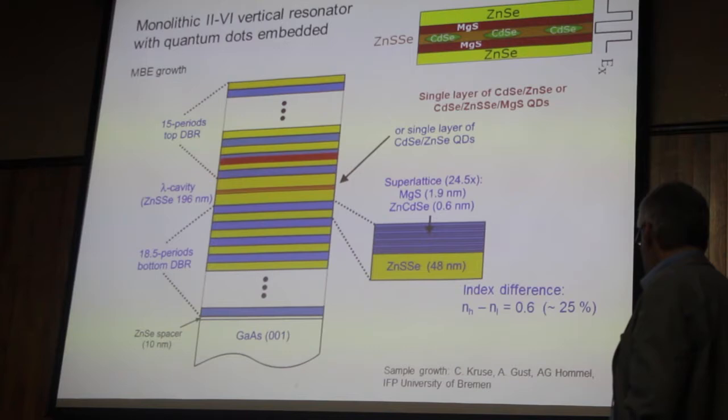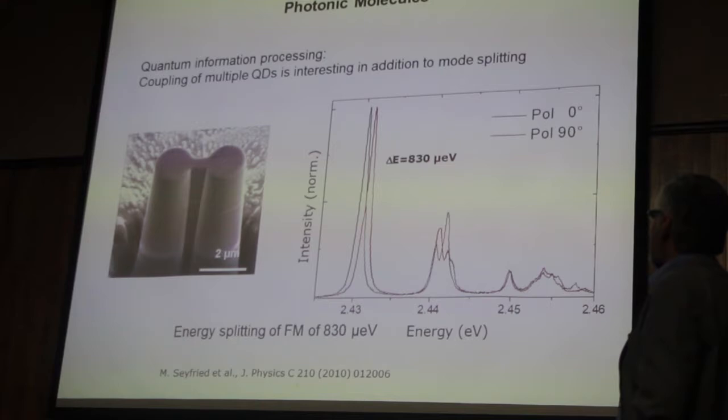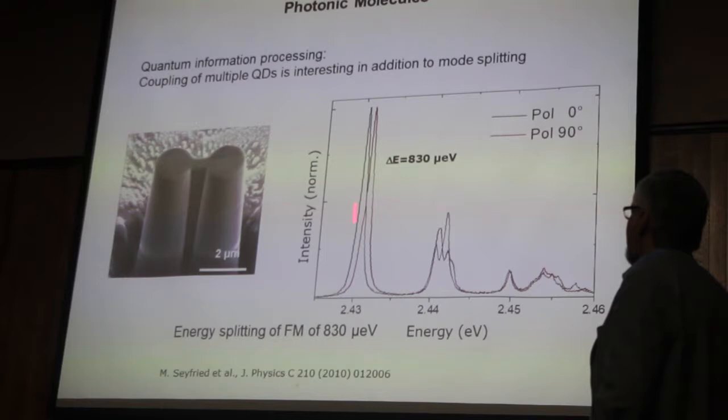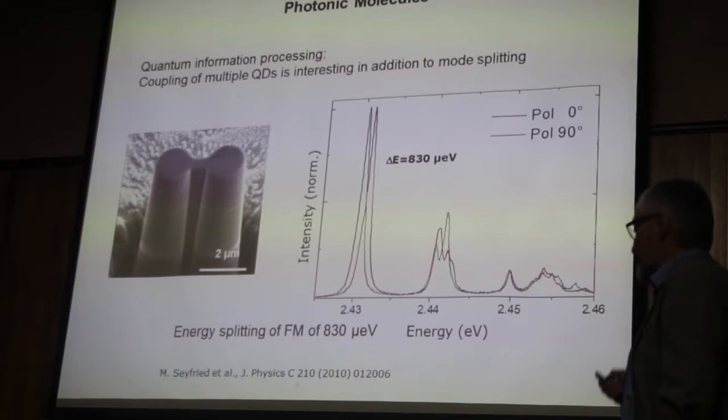Using a focused ion beam machine, we can cut various geometries. This is a double pillar system with a bridge, which produces coupled lateral modes with polarization dependence — a nice phenomenon to study.